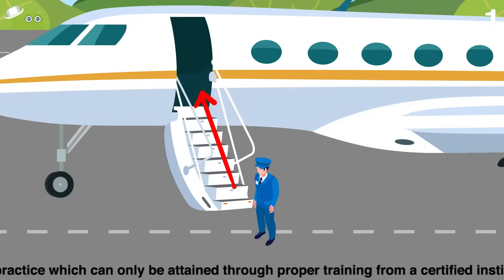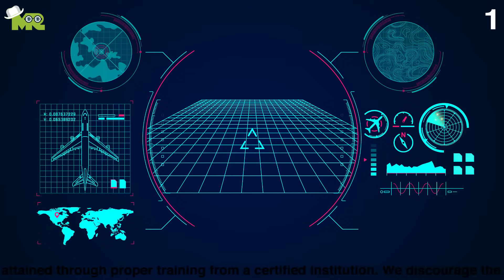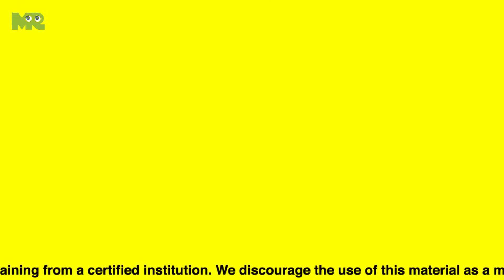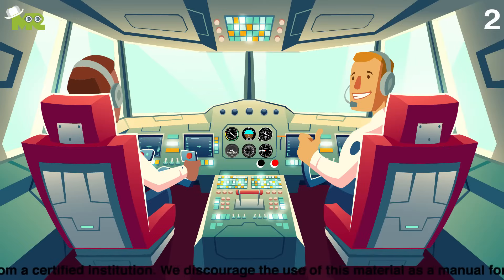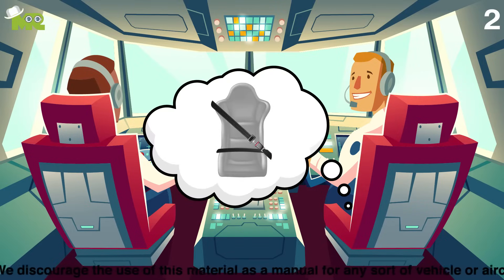First, after getting into your airplane, initiate an inspection of the aircraft by going through the instruction manual. Second, after getting settled into your seat, wear a seatbelt and become comfortable.